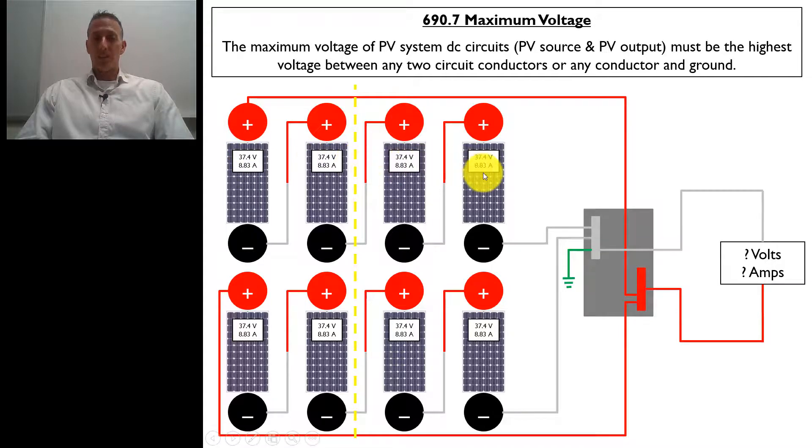So if we have four modules in series, we would take four times 40, and that would give us 160 volts that this circuit would produce. And if this series string would be the same, it'd be the same thing. We'd have 160 volts here, 160 volts here. When we combine those in parallel right here, the voltage stays the same at 160, but the current in this string would be 9 amps, and in this string would be 9 amps. When we combine those together, we would get 18 amps. So the output of this PV system right here would be 160 volts and 18 amps.